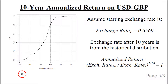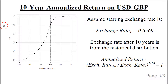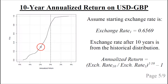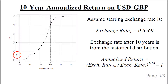We can plot the cumulative distribution function of the 10-year annualized return. It shows that the probability of having a loss — that is, the annualized return being less than zero — is 0.82, which matches the earlier result that there was an 82% probability the historical exchange rate was less than the starting rate of 0.6569. We can also read off that the probability the annualized return is less than minus 2% is about 28%, and the probability it is less than minus 4% is about 12%.